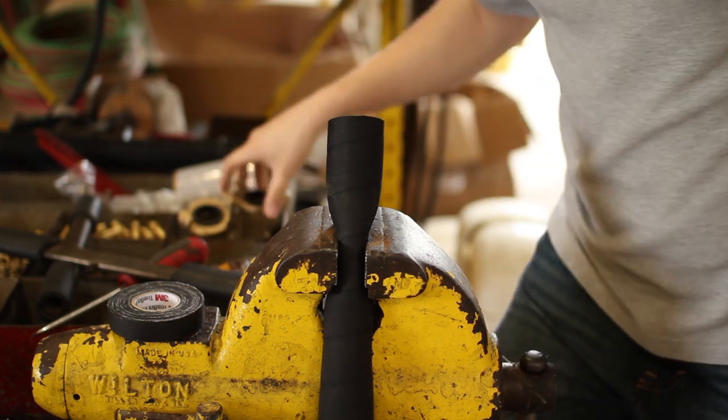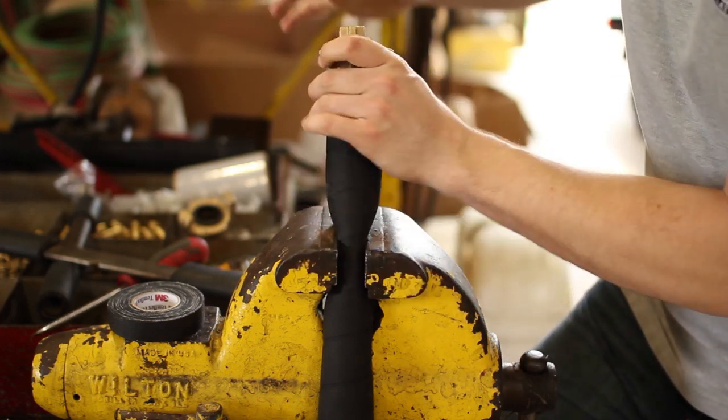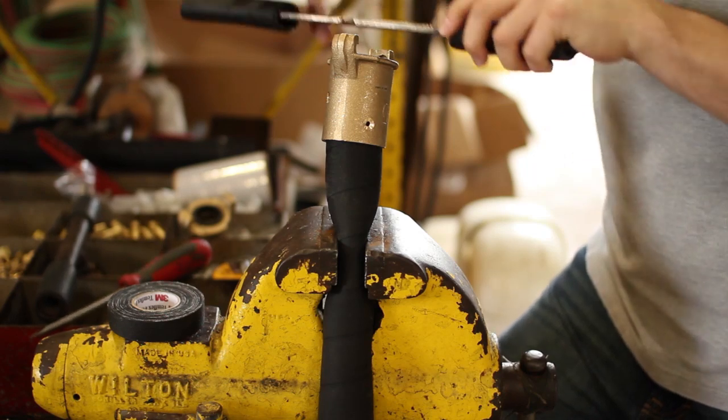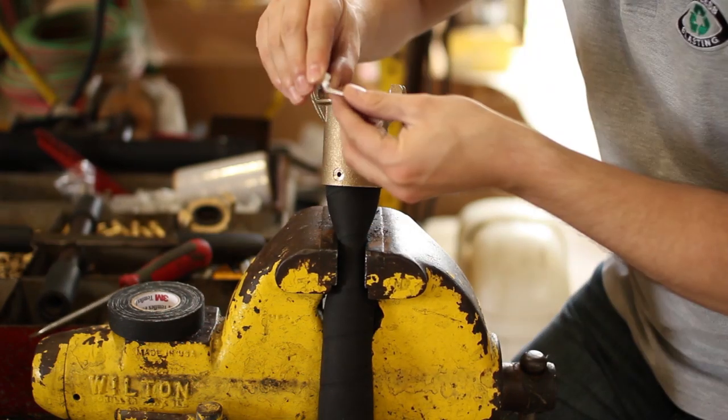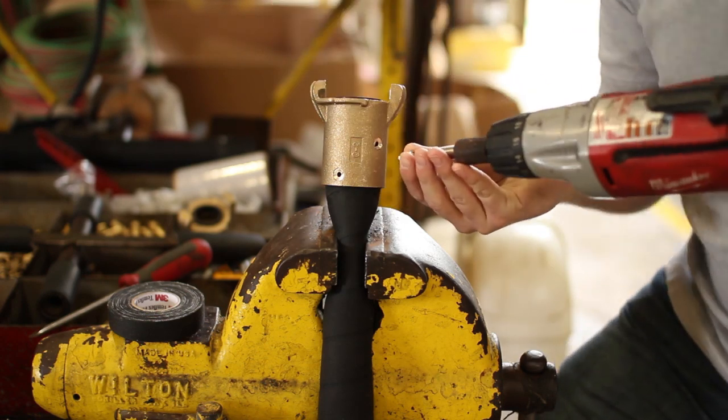Wrap the protruding hose with several layers of friction tape if you have any. Screw the brass coupling down onto the new hose until it won't turn anymore. Wrap the screws you saved with Teflon tape and drive them in with a drill or screwdriver.